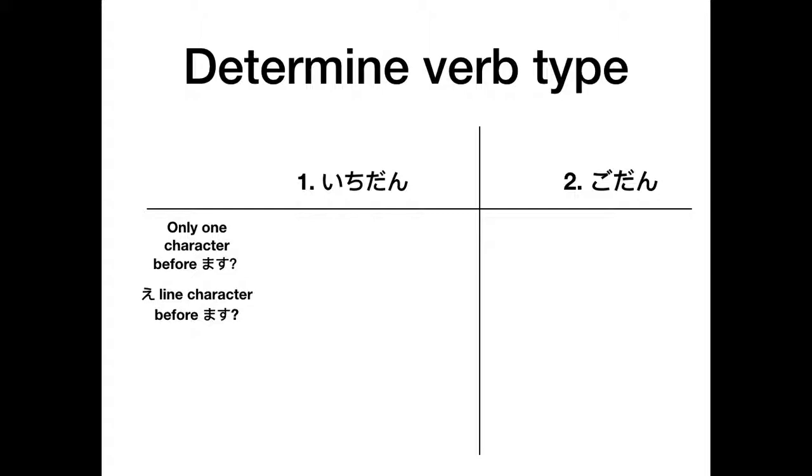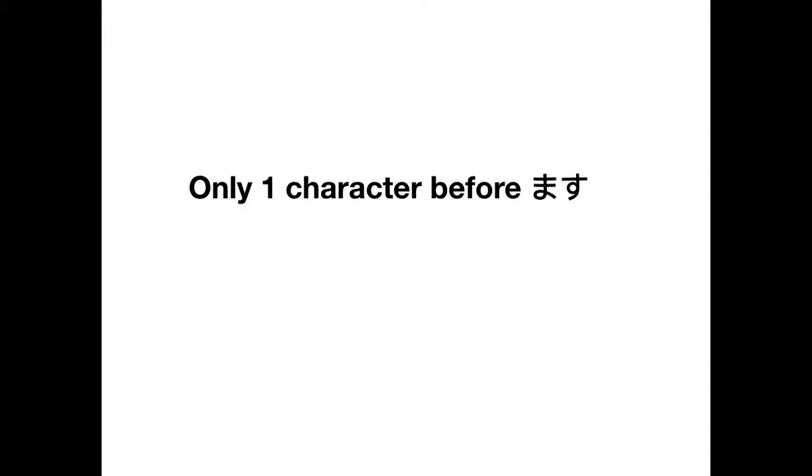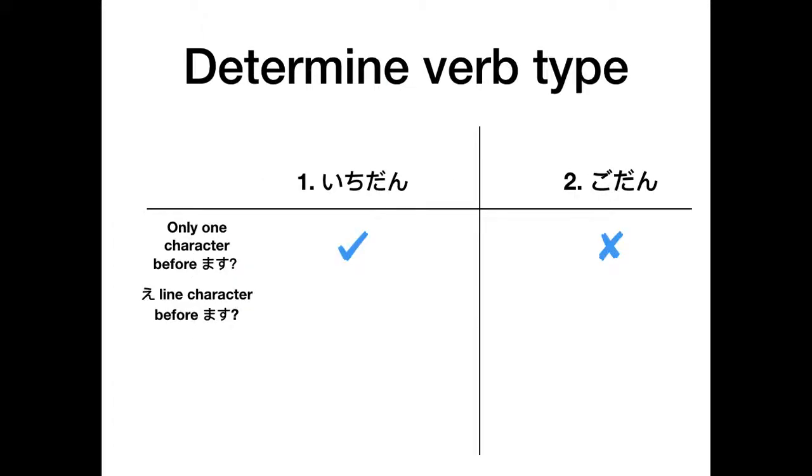First of all, how many characters are there before masu? If there's only one character before masu, for example, imasu, kimasu, or mimasu, then it's an ichidan verb.